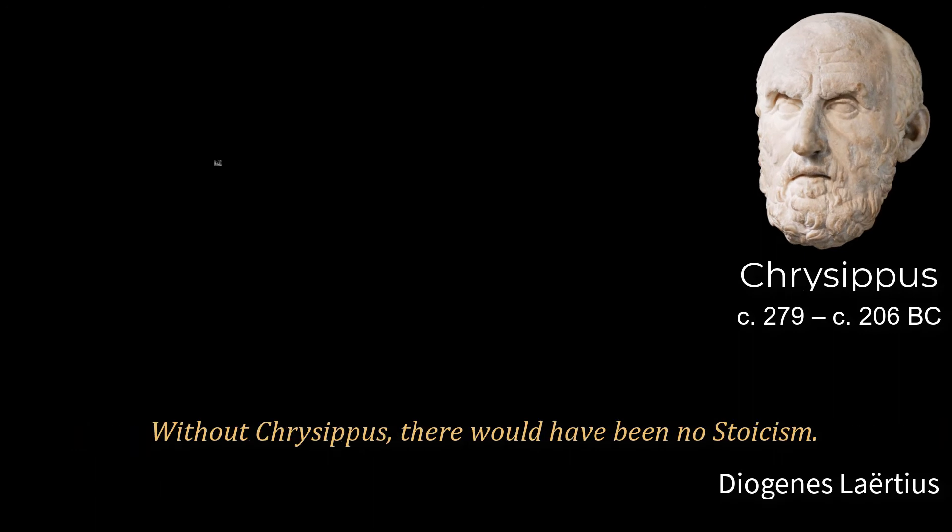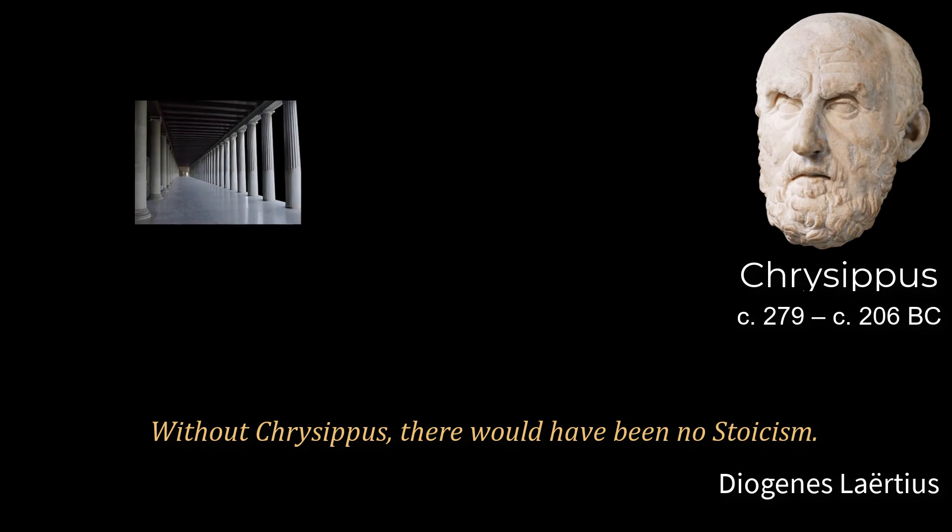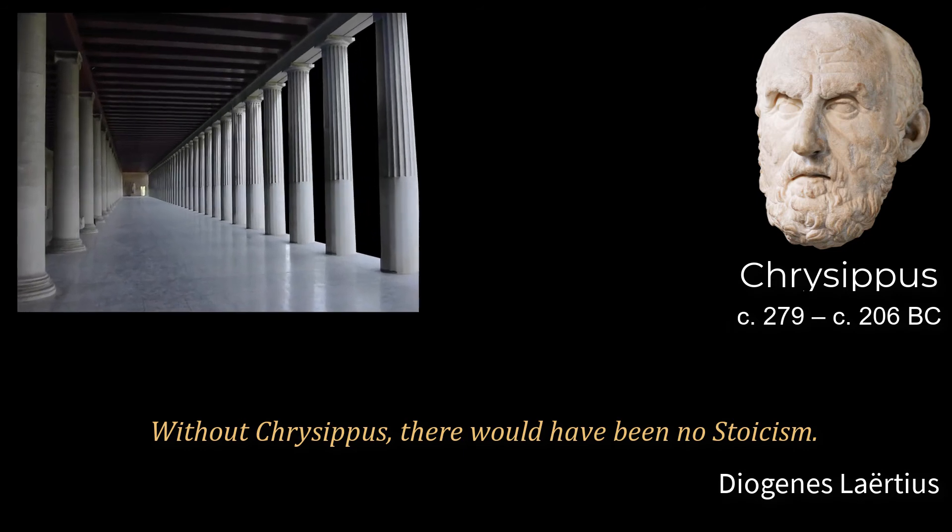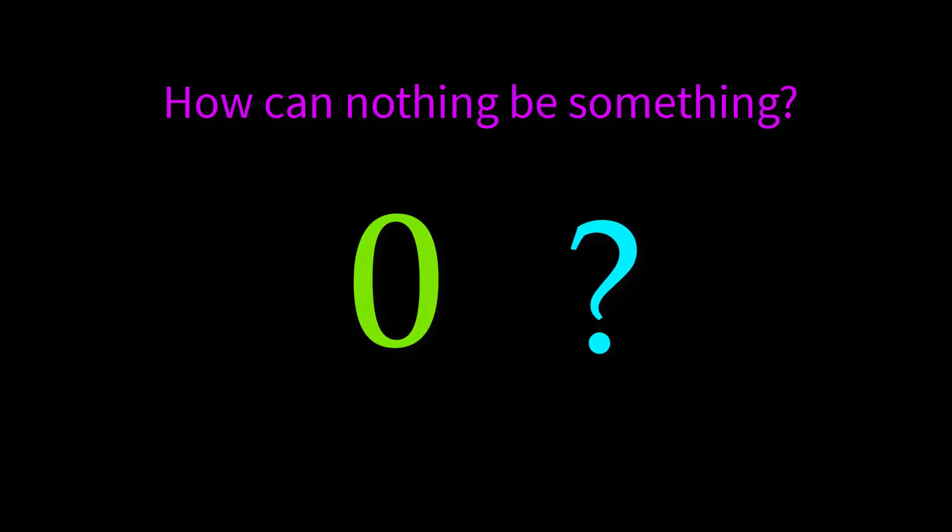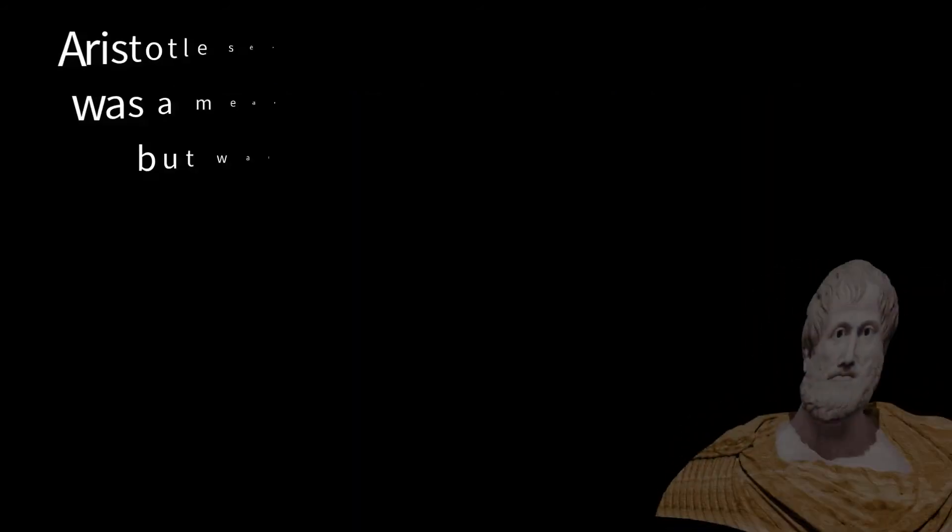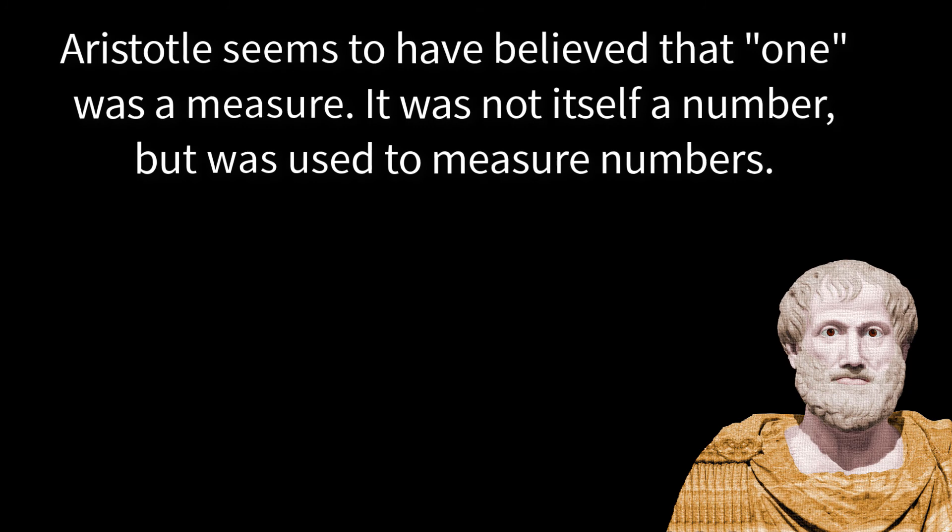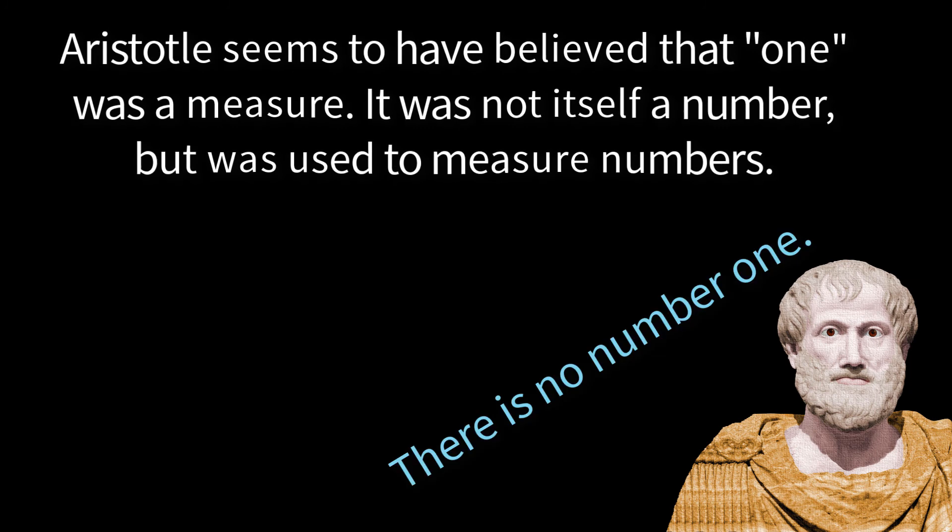Chrysippus was head of Athens' school of Stoic philosophy. His contributions to intellectual life were formidable, and he is regarded as one of the greatest logicians in history. It's well known that Ancient Greek mathematics was handicapped by its failure to recognize zero as a number. Less well known is the fact that most Ancient Greek intellectuals also didn't acknowledge one as a number.